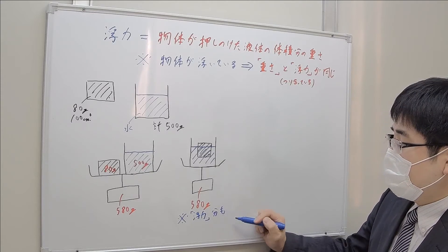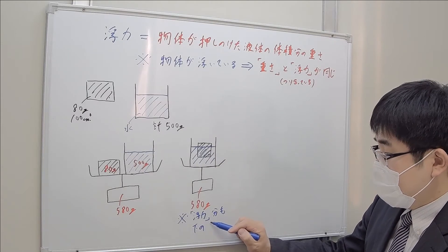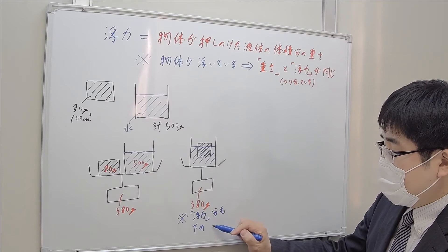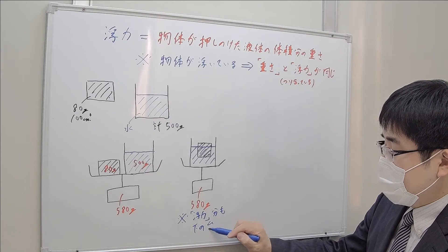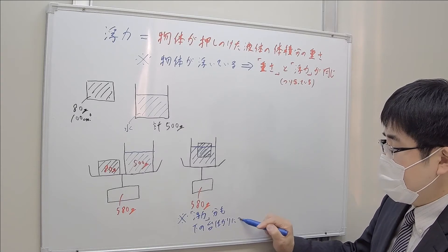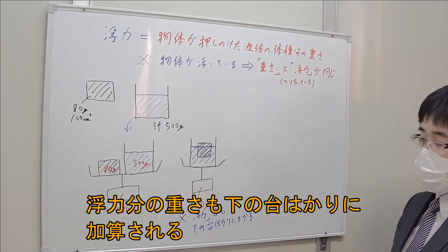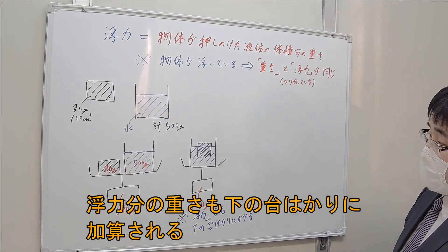だから、まあ言ってみれば、考え方としては、浮力分も下の台測りにかかるよって。これ結構大事なこと。The buoyant force is also measured by the platform scale below. This is quite important.